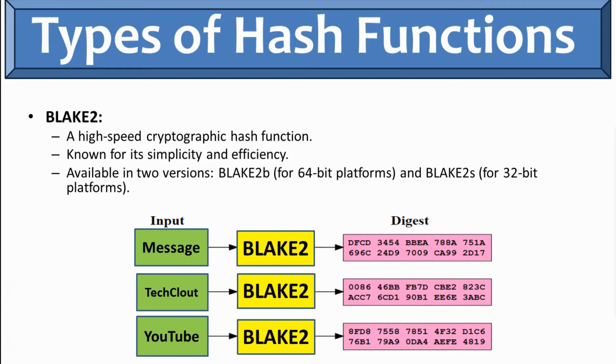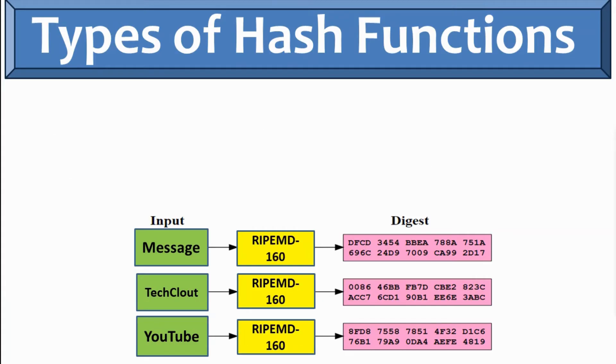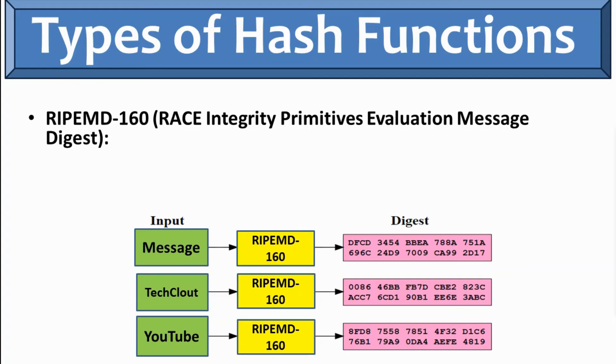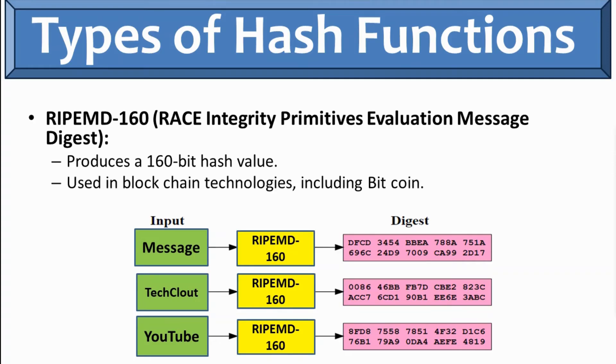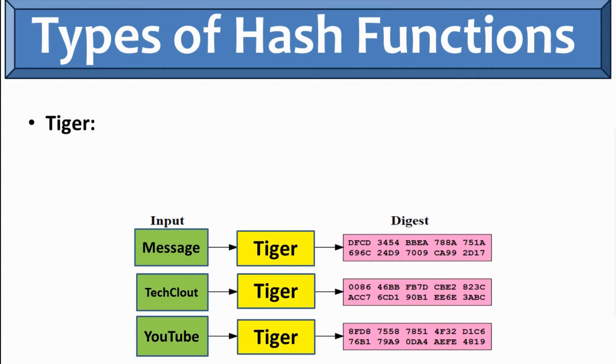Then we have RIPEMD-160. RIPEMD-160 means RACE Integrity Primitives Evaluation Message Digest. It produces 160-bit hash value and it used in blockchain technology including even Bitcoin. Then the Tiger. So this Tiger hash algorithm produces 192-bit of hash value and it is also known for its efficiency and simplicity.